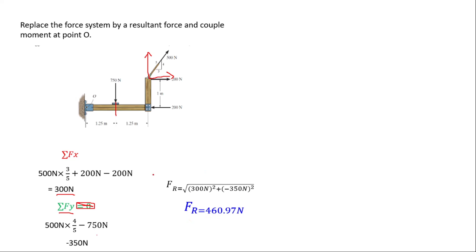We get the resultant to be 460.97 newtons. That is the resultant force. Now we find the direction angle phi, which equals the inverse tangent of the sum of y forces over the sum of x forces, giving us 49.3 degrees.